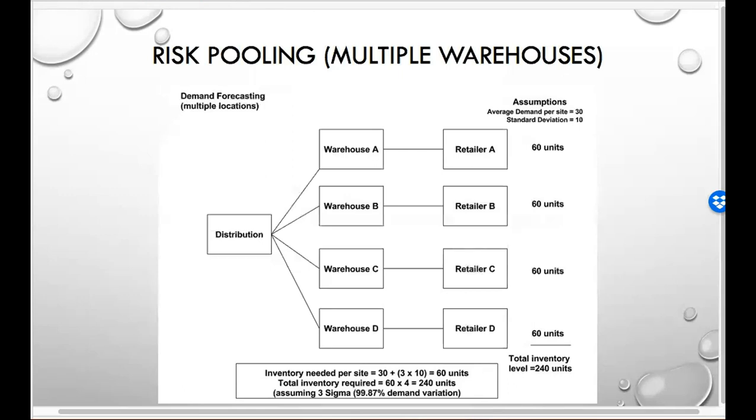So 30 plus three sigma worth of standard deviation is 60 units per site. So the total of 240 units. It's very simple math.